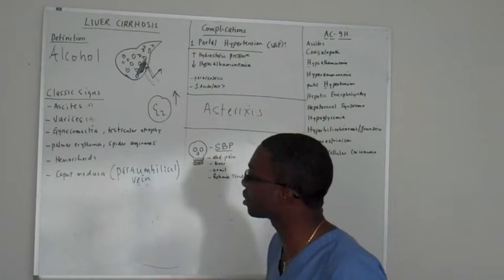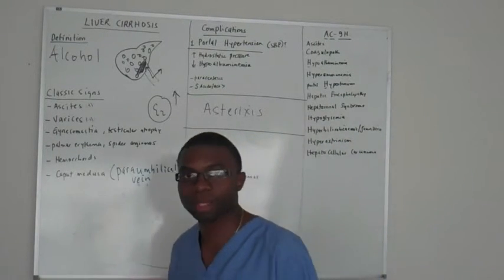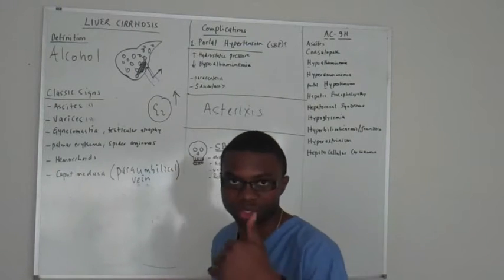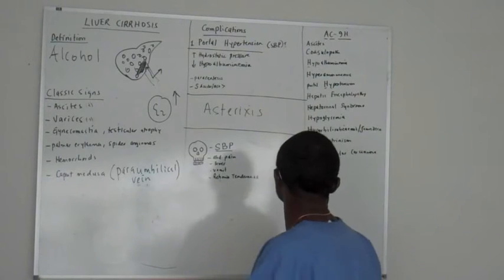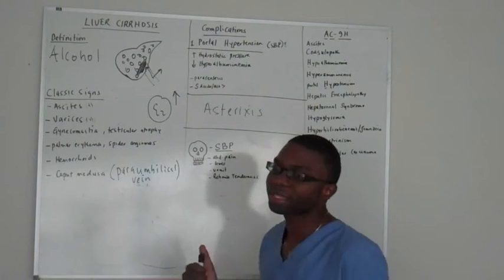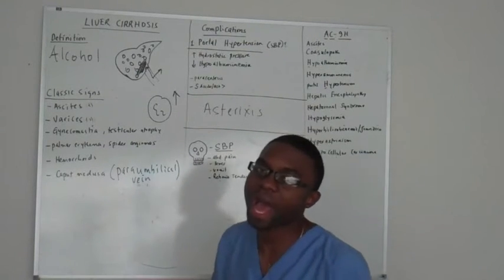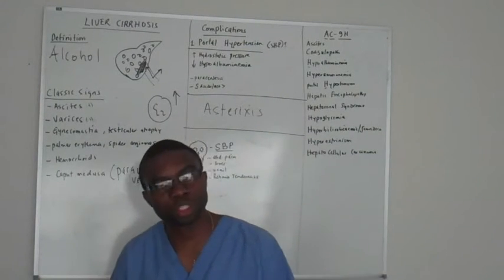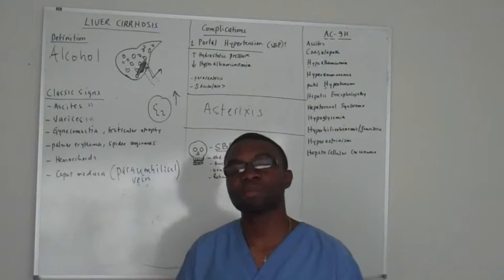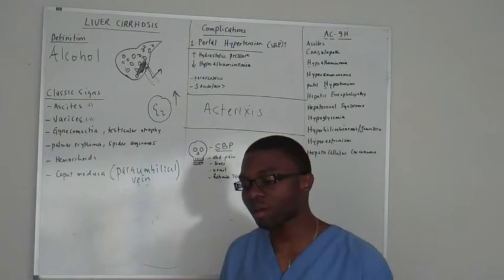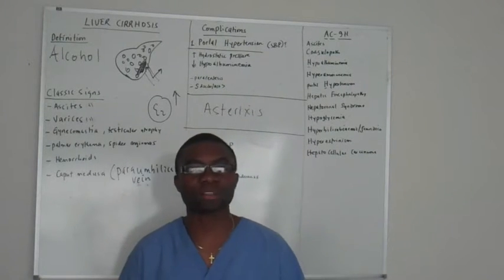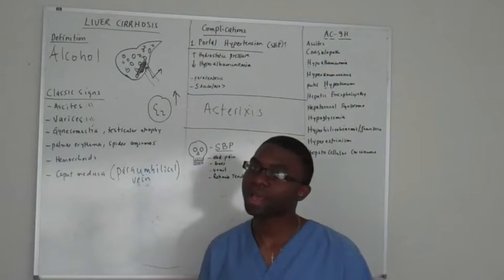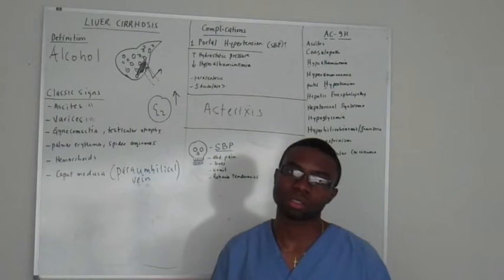Another thing — hyperestrogen. I already talked about that. The estrogen is going to be elevated. And unfortunately, the progression of alcoholic cirrhosis or any kind of cirrhosis is cancer.